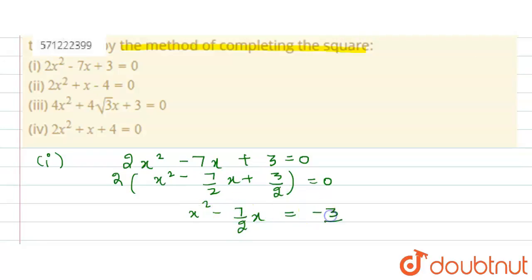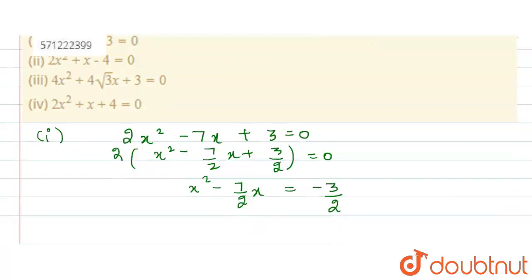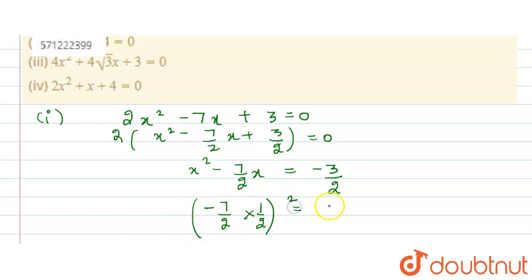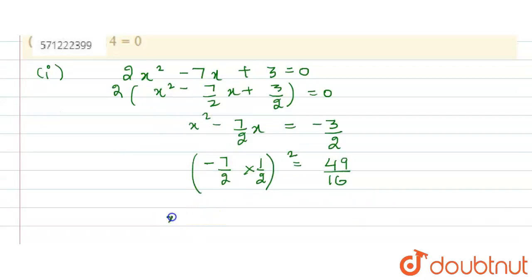Now I want to complete the square on the left hand side. I take the coefficient of x, which is minus 7/2, multiply it by half, and then square it. The term becomes 7² = 49 in the numerator and 4² = 16 in the denominator, giving 49/16. Adding 49/16 to both sides: x² minus 7x/2 plus 49/16 equals minus 3/2 plus 49/16.